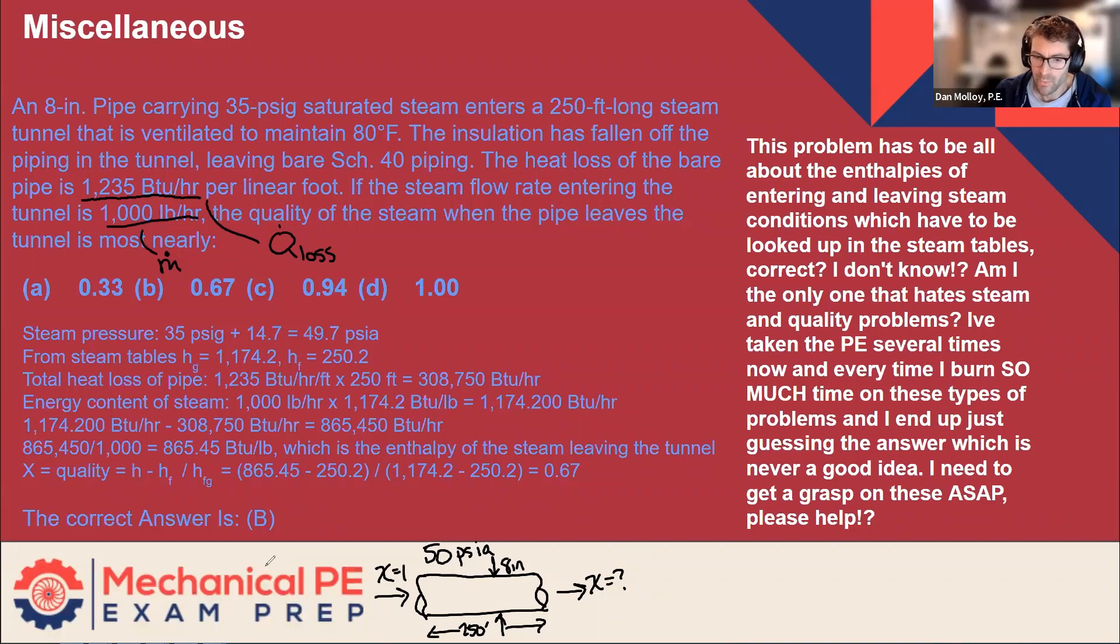And we want to know the leaving quality. So I think the guiding principle here is that there's some amount of energy entering the pipe. Then there is losses. And then there's the amount of energy that leaves the pipe. So this isn't a formula. You won't find this anywhere. But I think this is the big idea behind this problem, is that Q1, if I can call this entering condition state 1, and this leaving condition state 2,